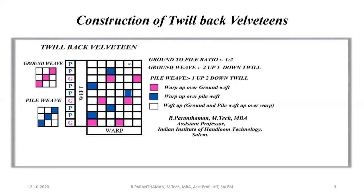It is a complete design of twill back velveteen using ground weave one-up two-down twill. The longest floats are visible. The red mark indicates warp up over ground weft, the blue color solid mark indicates warp up over pile weft, and blank indicates weft up.